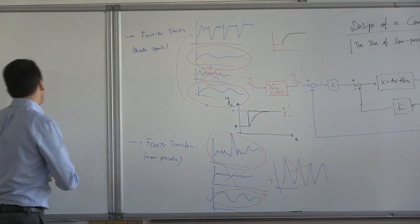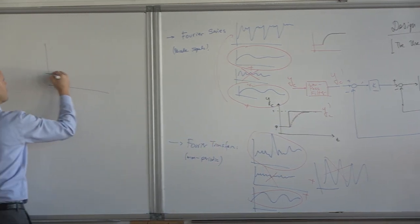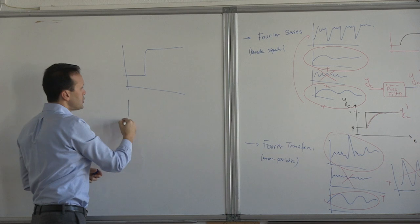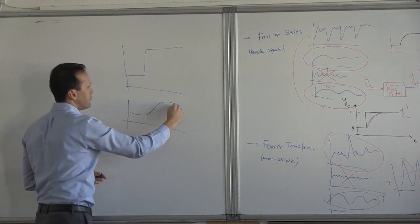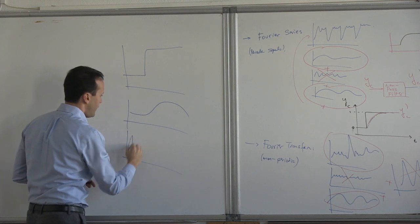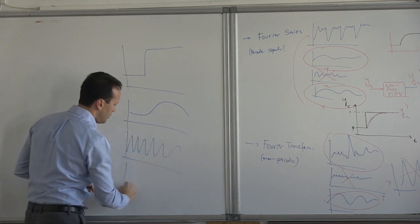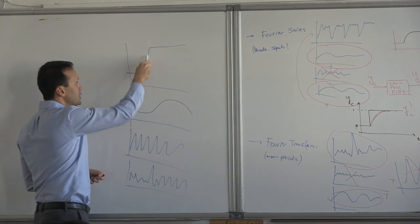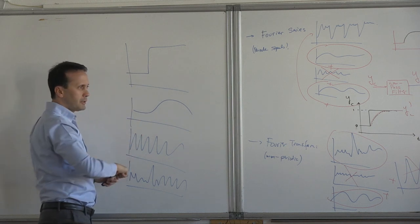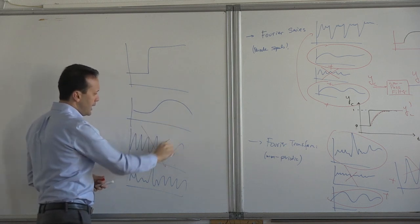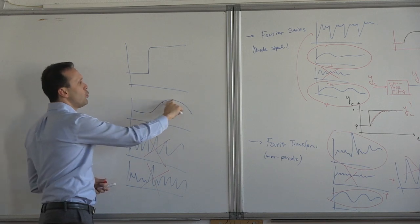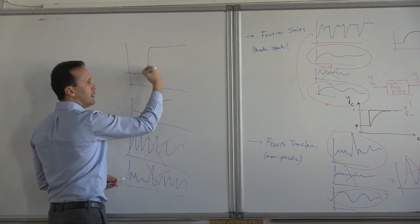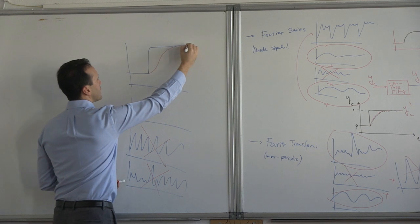If you look at a step input, this step input has quite high frequency content — jumping from here to here. In order to represent this sharp edge, you probably need fast-frequency components to regenerate this sharp part. So a low-pass filter will simply remove the high frequencies and keep just the low-frequency content. Send a step input through a low-pass filter and you would obtain something smooth like this.